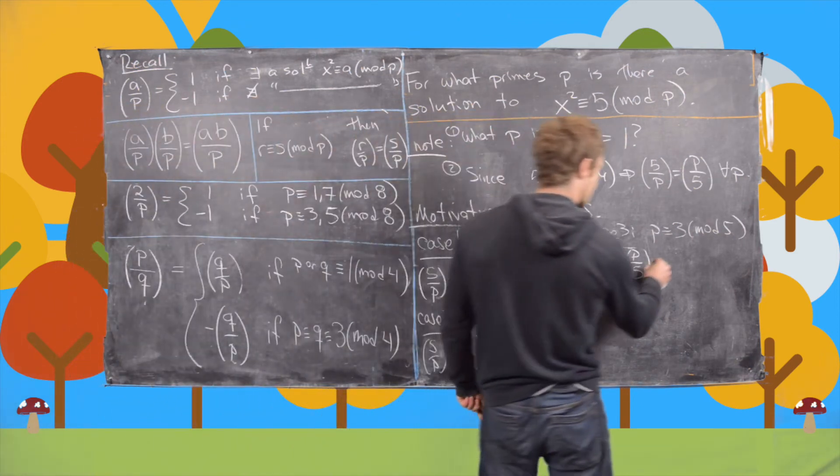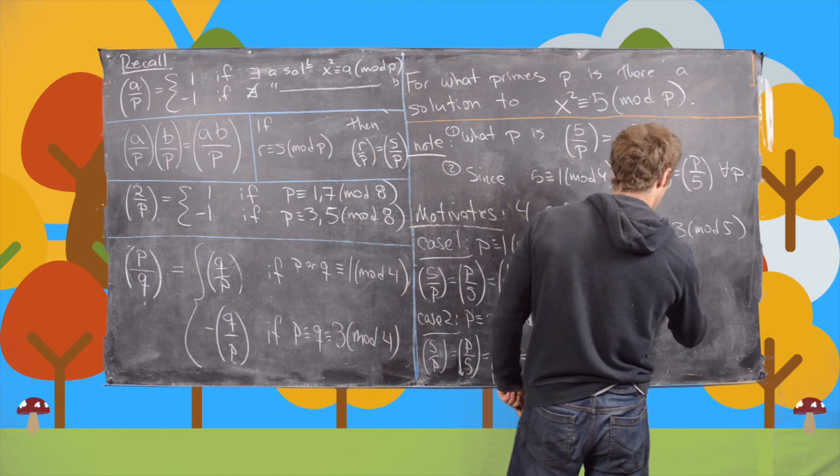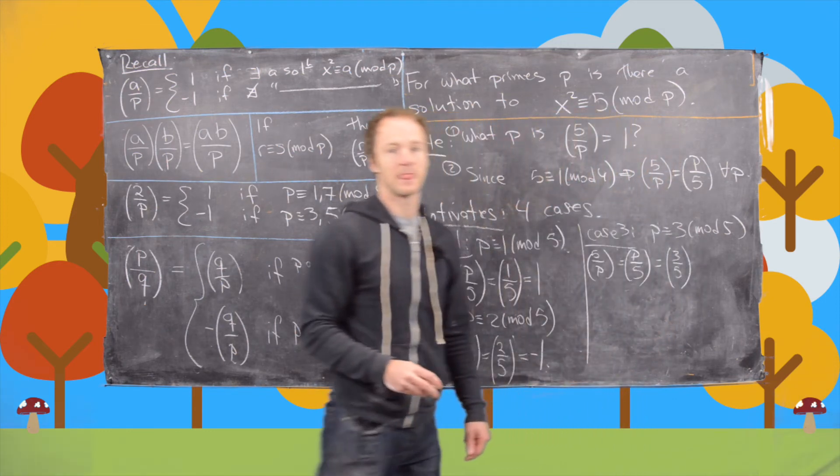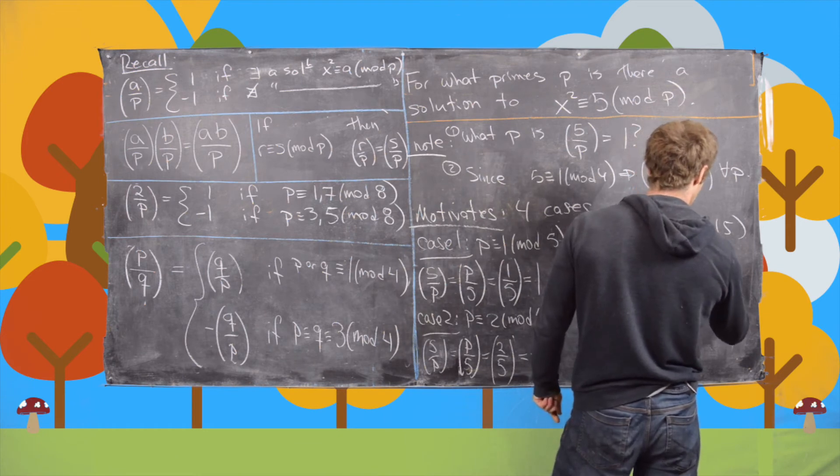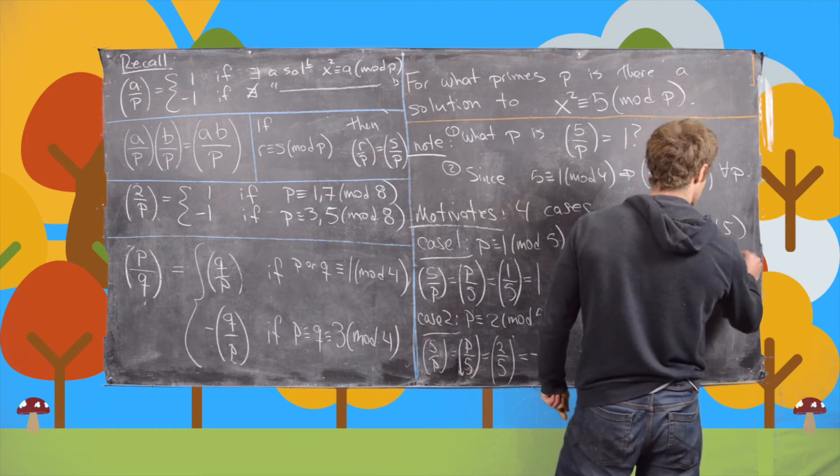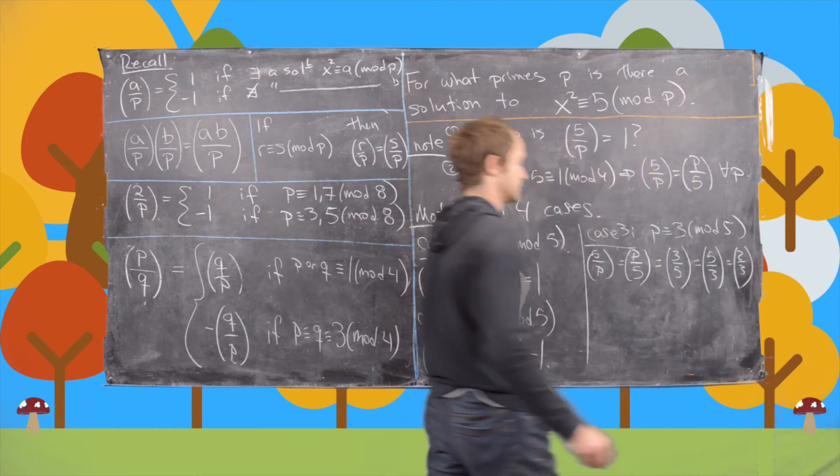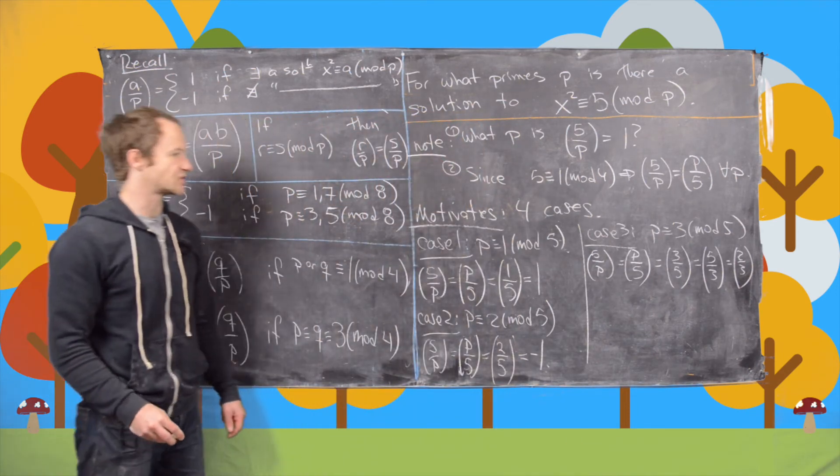And then by this property, once more, we have this is equal to 3 by 5. And now we can flip that again. So that's going to give us 5 by 3 which is equal to 2 by 3, again by doing a reduction modulo 3.